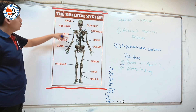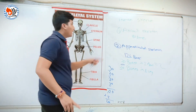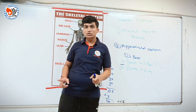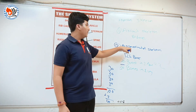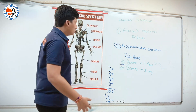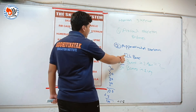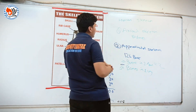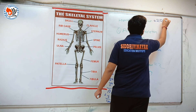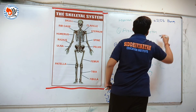This is the whole human skeleton. Let's revise: in axial skeleton there are 80 bones, and in appendicular skeleton there are 126 bones. Together, 126 plus 80 equals 206 bones in the human skeleton.